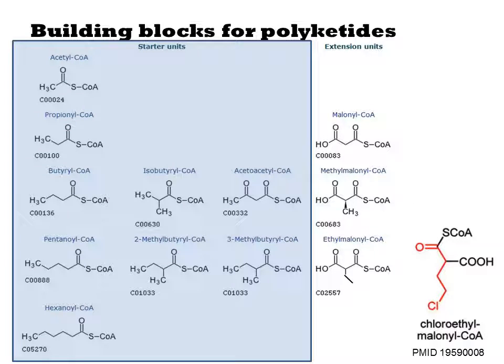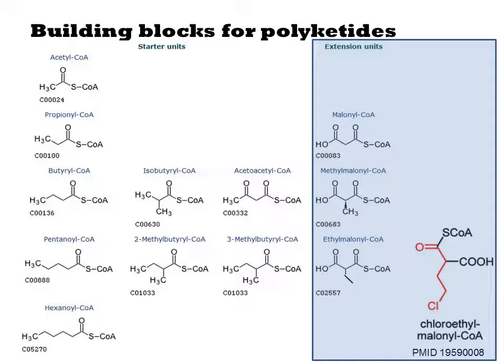A great many starter units can be used. They all need to be CoA thioesters, but that is the only chemical requirement. It is common to have unusual and large starter units for type 1 biosynthesis. There is similarly some diversity around the choice of extension units. The most common ones are malonyl-CoA and its methylated derivative, methylmalonyl-CoA. However, others including olefins, amines, ethyl groups, and chlorines are sometimes observed.